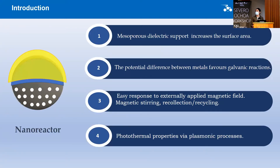First of all, what is a nanoreactor? A nanoreactor contains a mesoporous dielectric support and a bimetallic nanoshell. The mesoporous dielectric support increases the surface area of the nanoreactor and increases its efficiency, while the bimetallic nanoshell increases the potential difference between metals and favors galvanic reactions.